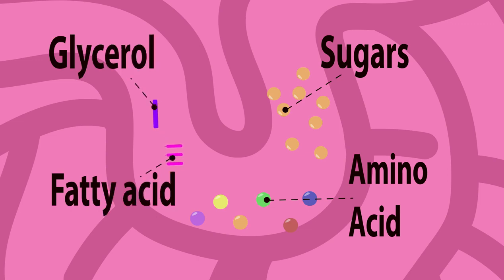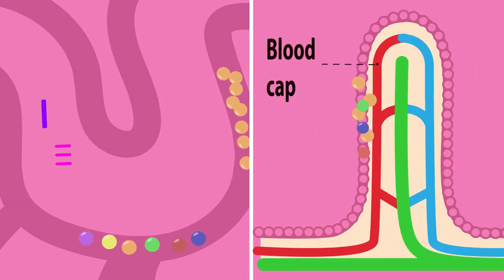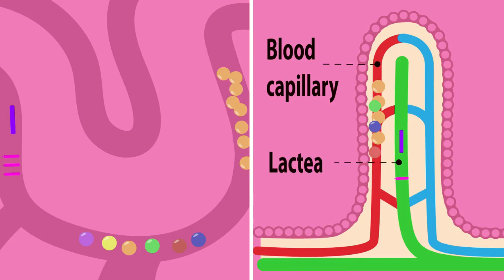But sugars, amino acids, fatty acids, and glycerol are all small enough to pass through. Sugars and amino acids pass through the holes into the blood capillary, while fatty acids and glycerol pass into the lacteal of the villi.